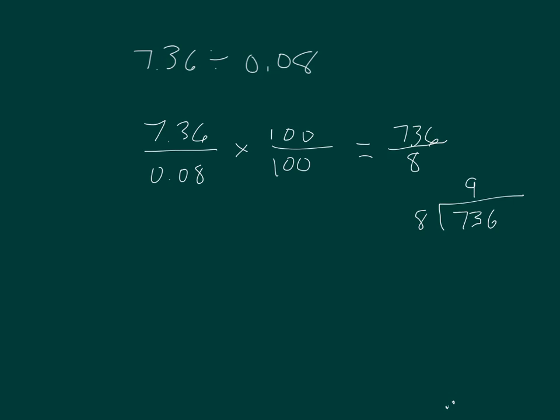So we have 736 eighths, which we can solve as 736 divided by 8. That's 9. 9 times 8 is 72. 73 minus 72 is 1. Bring down the 6. 16 divided by 8 is 2. So the answer is 92.